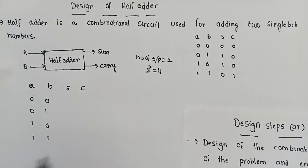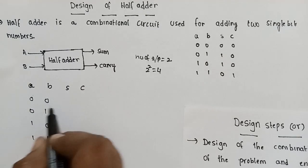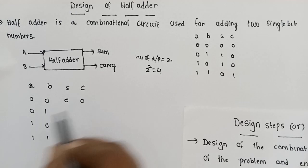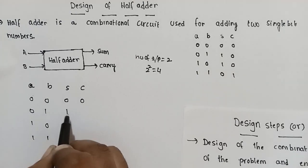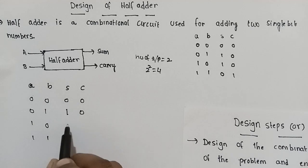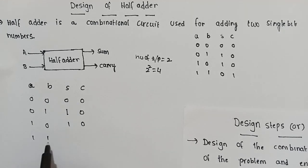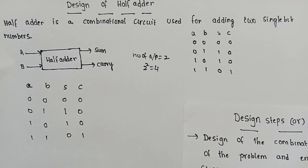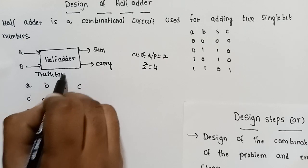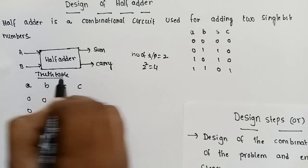For inputs A and B: 0+0 gives sum 0 with carry 0; 0+1 gives sum 1 with carry 0; 1+0 gives sum 1 with carry 0; 1+1 gives sum 0 with carry 1. That is the complete truth table for the half adder.